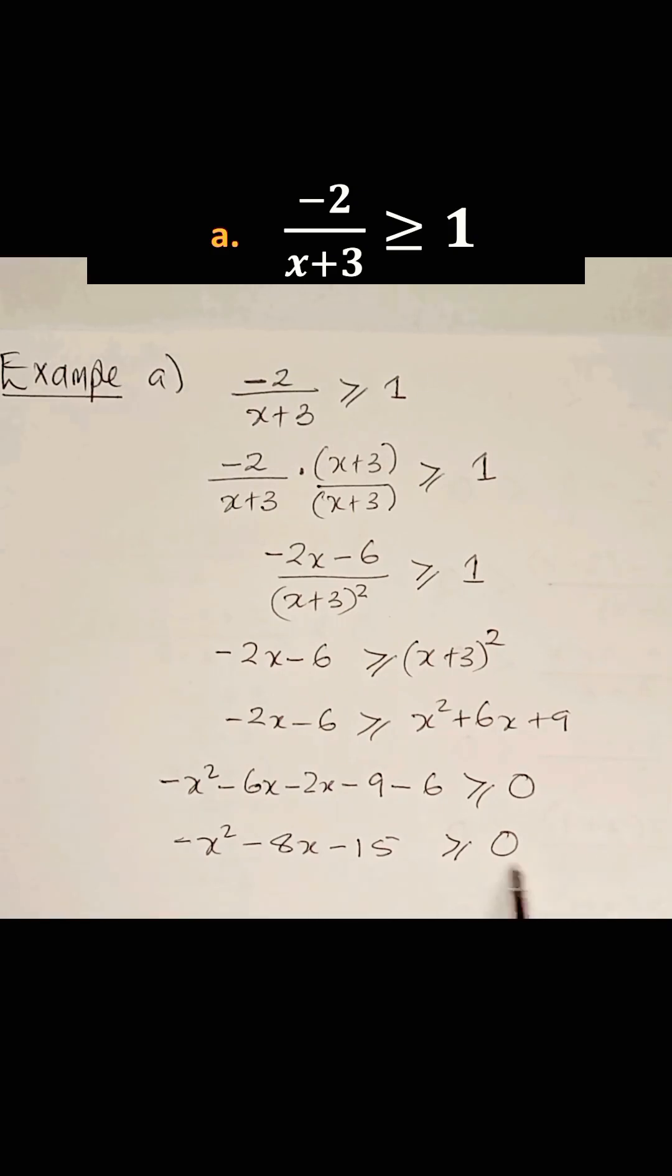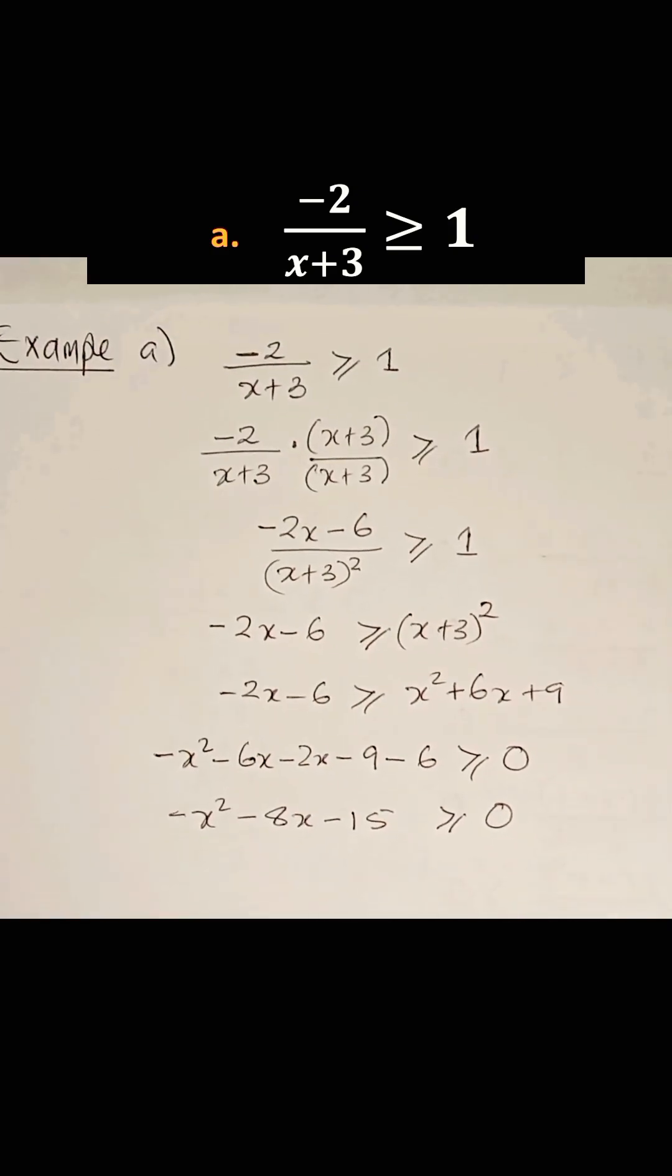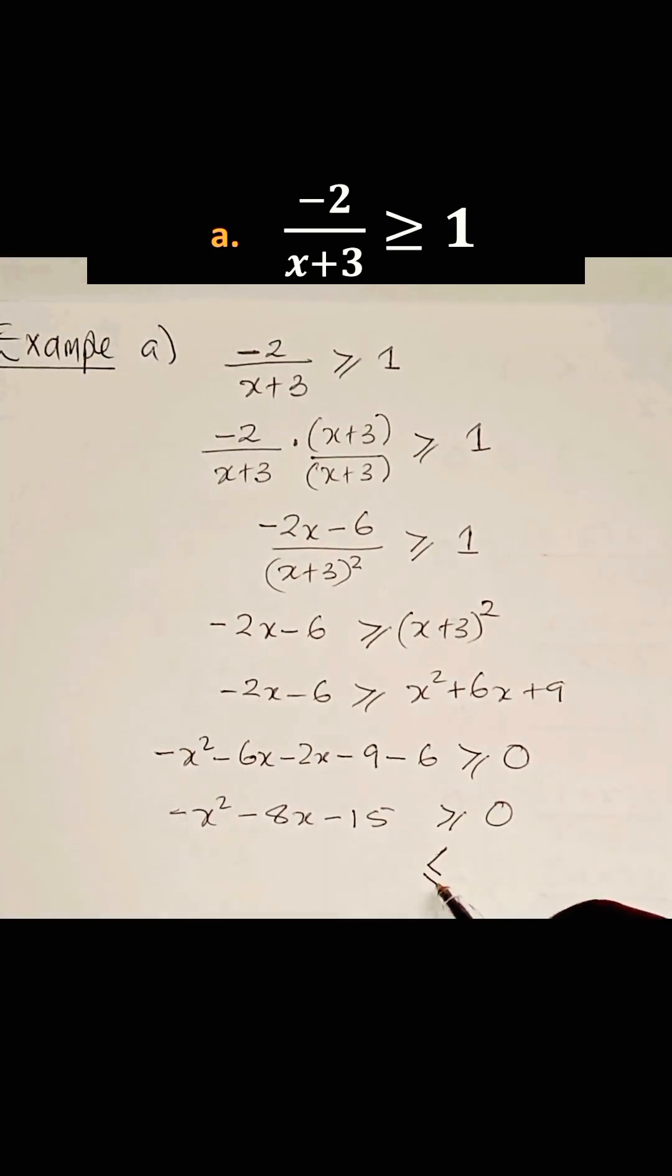We can multiply throughout this inequality by a negative. But the moment we multiply by a negative, the inequality changes sign. So we multiply this by a negative, we all get positives. So we have x² + 8x + 15.